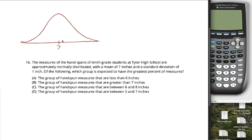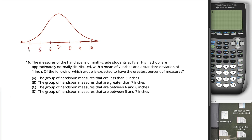You want to space things out so that by the time you're 3 standard deviations above the mean and 3 below the mean, you're pretty far out into the tail. So you put an 8, a 9, and a 10 on the right, and a 6, a 5, and a 4 on the left. We'll pretend those are evenly spaced out.